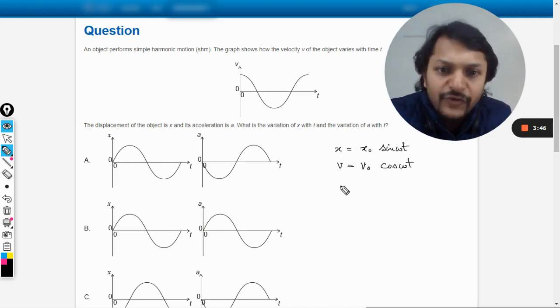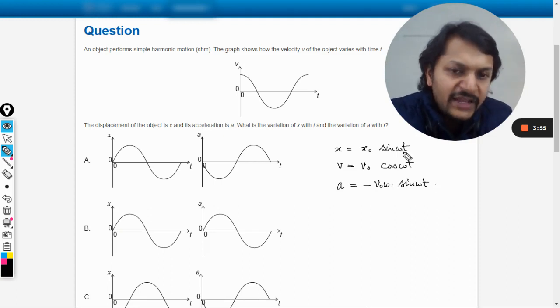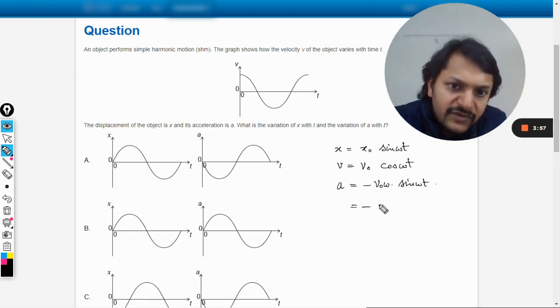And if you further differentiate it, the acceleration will become negative and it will come out to be negative v_naught omega into cos omega t. Anyways, the things will be given - they are given in your data booklet. You can verify.